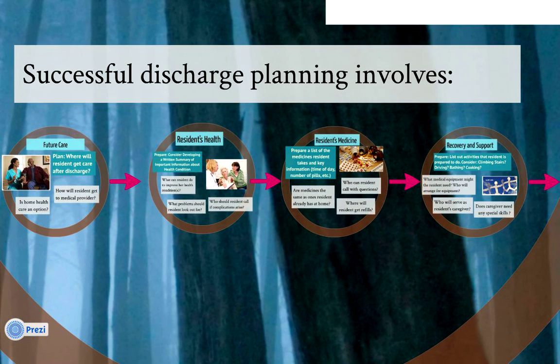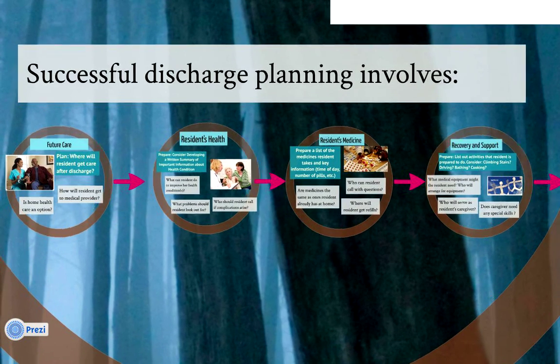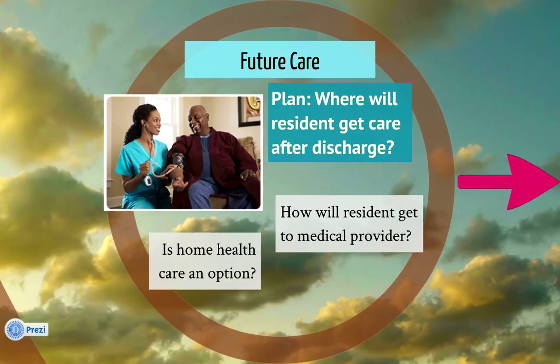One important topic to discuss at a care plan meeting is future care. Facility staff should help the resident plan where they will get care after they are discharged. Issues to consider include whether home health care is an option and how the resident will get to and from the medical provider's office. As an ombudsman, you may advocate for a resident by ensuring they have a plan for future care and by referring them to community resources that could help them in their new home.